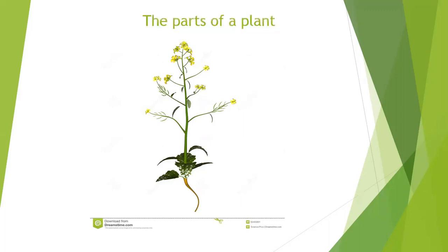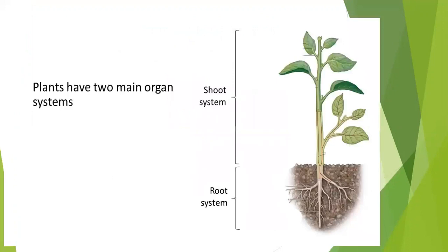So here you can see in the pictures two main important parts of the plants are root and shoot. Root originates from the lower portion of a plant inside the ground which fixes the plant in the soil. Root absorbs water and minerals from the soil.